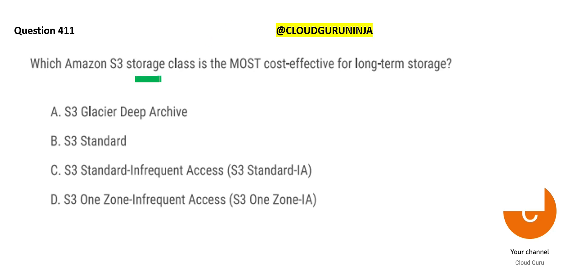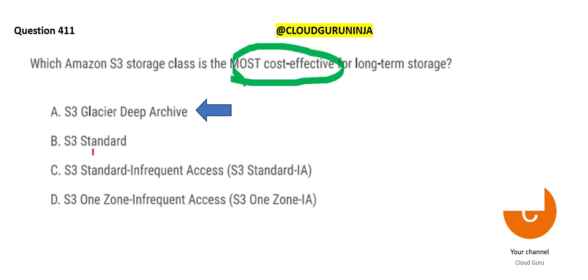Next question: this is an S3 storage class question. We want to store data long term — what is most cost effective? No-brainer: Glacier Deep Archive. It is long-term storage. The data is stored very deep, so you cannot access it frequently — data retrieval costs are high but storage is cheap. Standard storage is for frequently used data accessed every day.